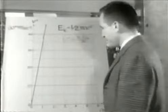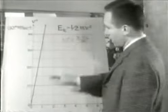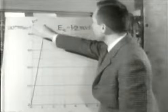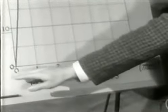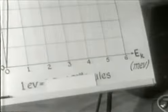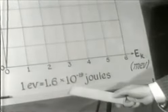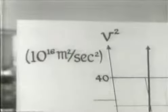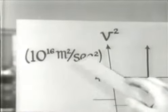Useremo elettroni. Qui abbiamo rappresentato questa relazione newtoniana per gli elettroni. La linea retta rappresenta il quadrato della velocità in funzione dell'energia cinetica. Viste le energie disponibili nel laboratorio, abbiamo messo l'energia cinetica sull'asse orizzontale in unità di milioni di elettron volt. Un elettron volt è l'energia acquistata da un elettrone che attraversa la differenza di potenziale di un volt, cioè uno e sei per dieci alla meno diciannove joule. Sull'asse verticale sta il quadrato della velocità in unità di dieci alla sedici metri al quadrato per secondo quadrato.